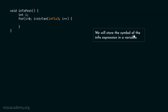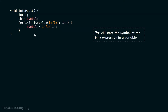Now, we will store the symbol of the infix expression in a variable. We just need this line of code: symbol = infix[i]. We know that if i is zero, infix[0] means the first character of the infix array — we store that character in symbol. We will use this variable later for condition checking. The type of the symbol variable is char.